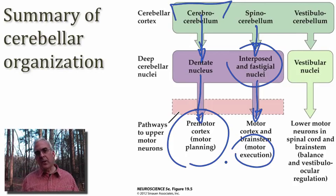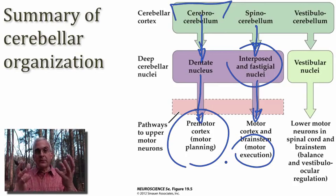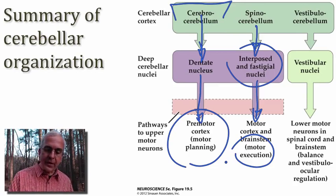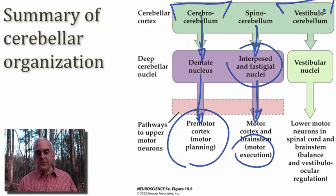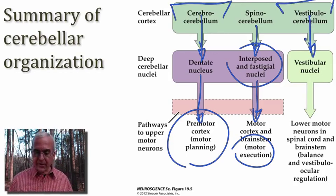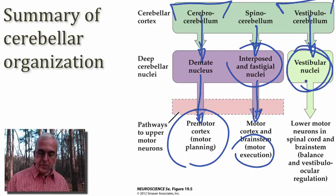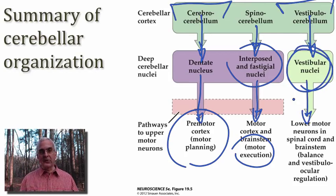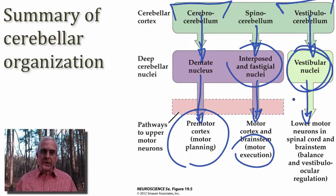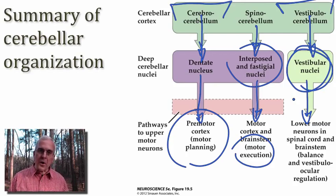The cerebrocerebellum is associated with activities guided by the premotor cortex, especially skilled behaviors we do with our hands and feet. The vestibulocerebellum — that floccular nodular lobe — is directly connected with the vestibular nuclear complex of the brainstem, which is mainly concerned with the feedback adjustment of posture given signals associated with accelerations of the head, helping to stabilize our posture against unanticipated disturbances.